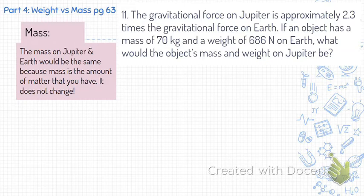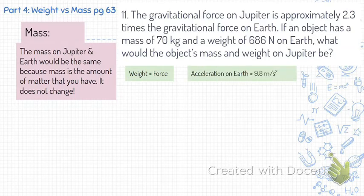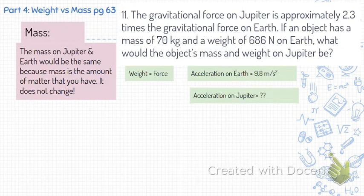Let's talk about how to measure weight. When we're talking about weight, it's essentially measuring force. We want to remember that force equals mass times acceleration. So we need to identify the acceleration difference on Jupiter versus Earth. The acceleration on Earth is 9.8 meters per second squared. What's the acceleration on Jupiter?